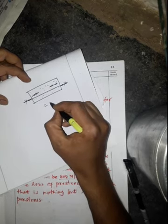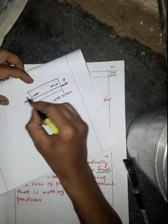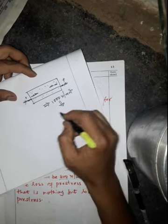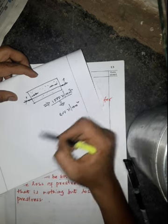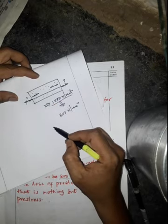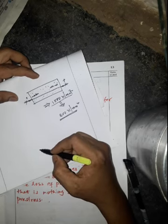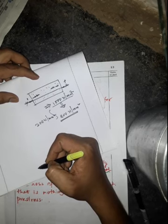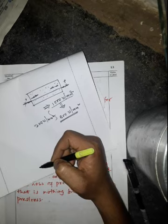For example, a beam is initially designed with a pre-stress of 1000 N/m². But at the initial stage, and later after five or ten years when we check, we find the stress is equal to 800 N/m². We designed for 1000 N/m² but the final stress in the concrete is 800 N/m², meaning there is a loss of 200 N/m². There are many factors and causes by which losses develop in concrete, and we will discuss them one by one.